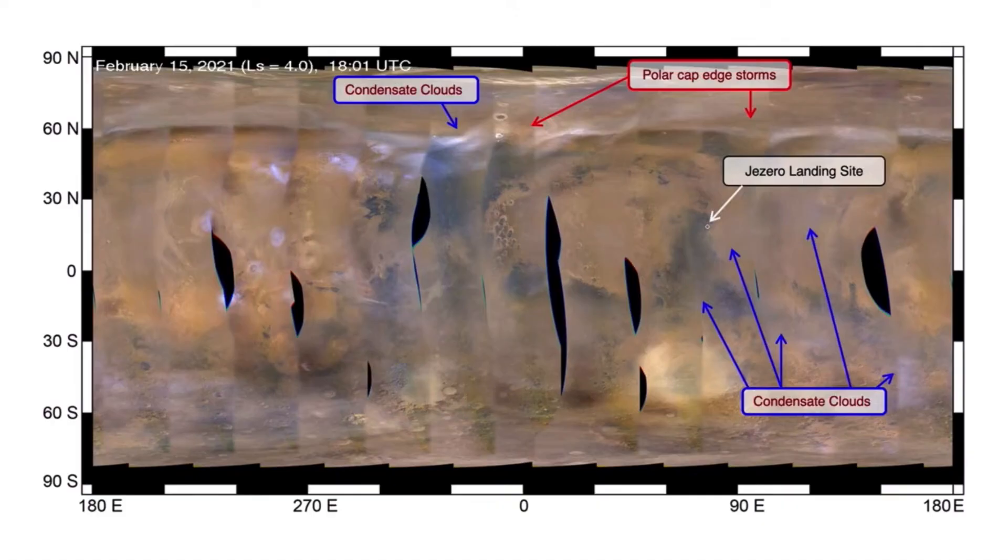But the weather conditions look pretty favorable for us right now. As you can see from this image, the conditions are seasonal. There are some clouds out there and some polar cap edge storms, but nothing near our Jezero landing site that's over there in the white.